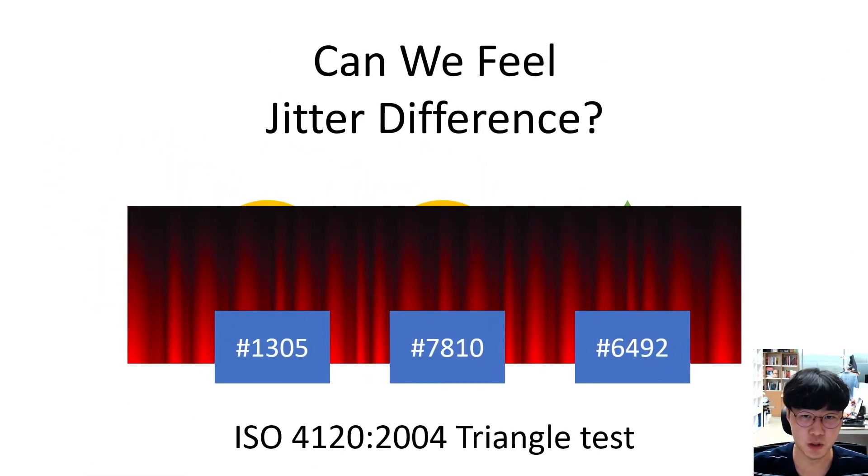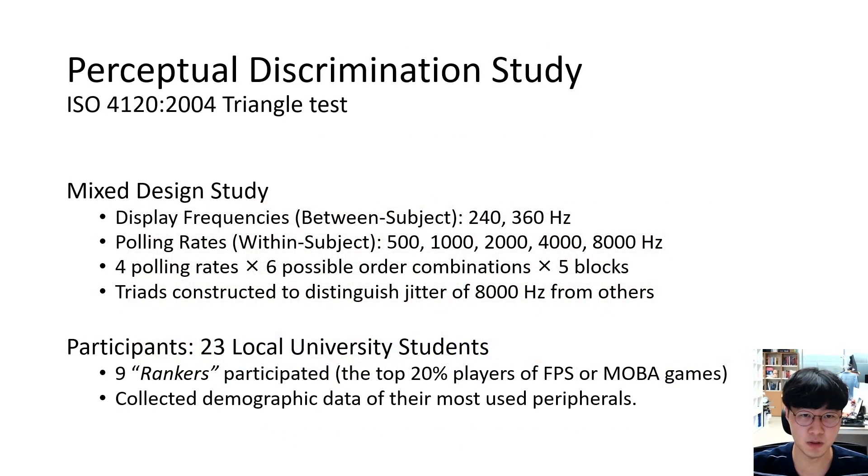To compensate for the limited choice of stimuli granularity, we performed the triangle test which is considered one of the most frequently used discrimination tests for determining whether participants can distinguish two different stimuli. Our experiment was designed in a mixed manner with the display frequencies as between subject factors and the polling rates as within subject factors. This was because different display frequencies introduced more noticeable differences in the cursor movement than the effect of jitter. Under a given display frequency, the participants were asked to distinguish the reference 8000Hz polling rate from four lower polling rates using the triangle test procedure.